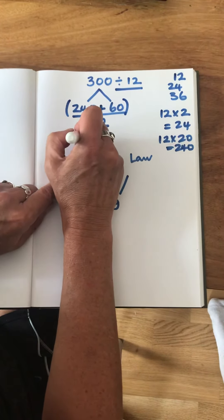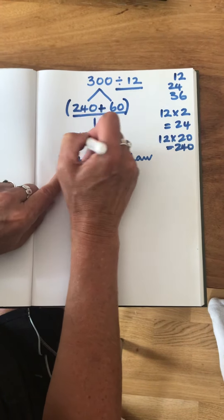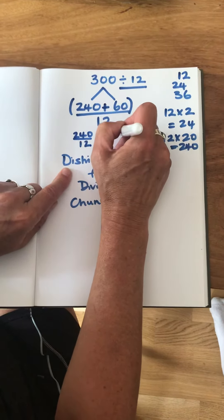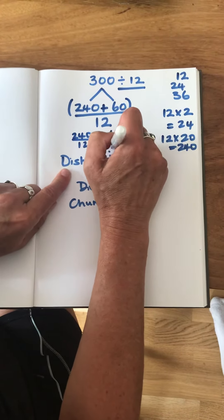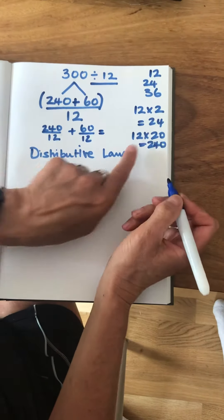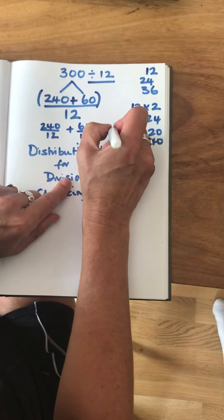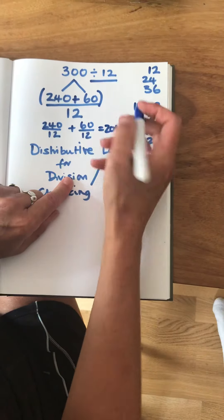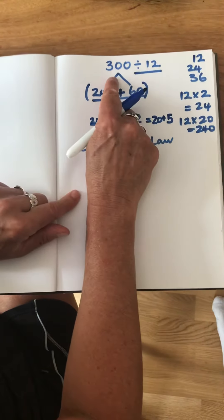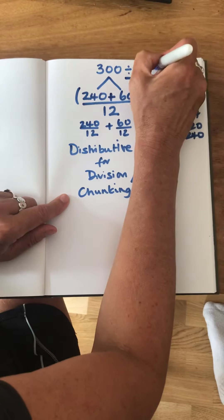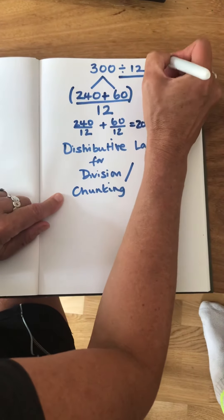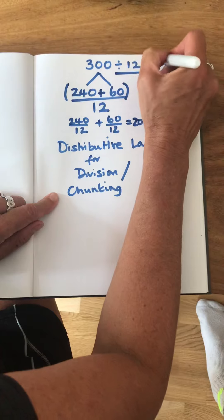So we have 240 divided by 12 plus 60 divided by 12. This we know is 20, and 60 divided by 12 is 5. So 300 divided by 12, using the distributive law for division, is 25.